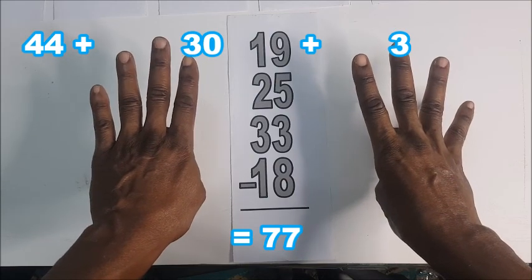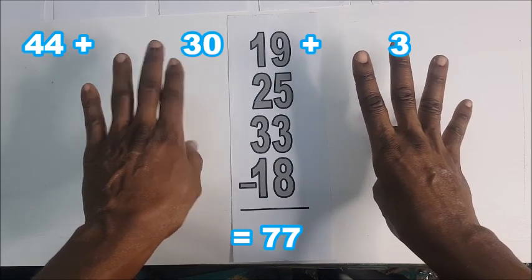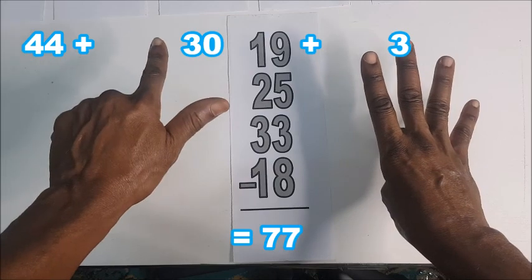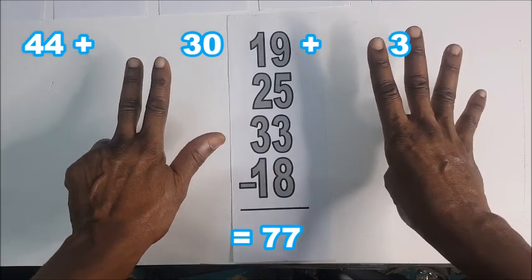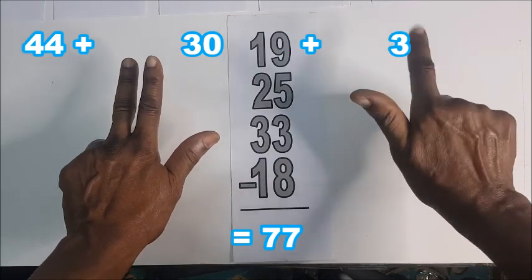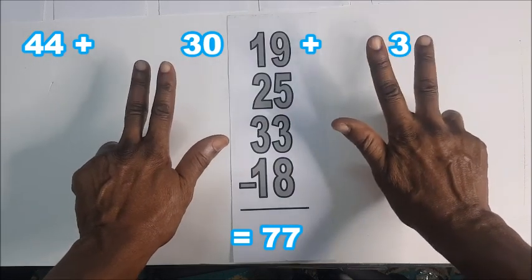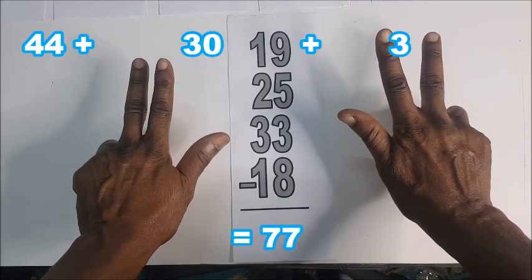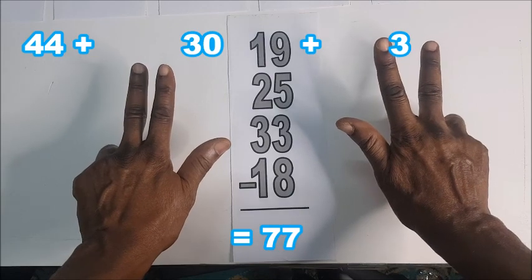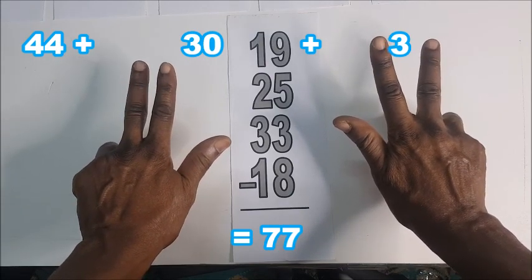We go to the left first: 30, 10, 20, 30, and here 3, 1, 2, 3. So 44 plus 33 is 77.